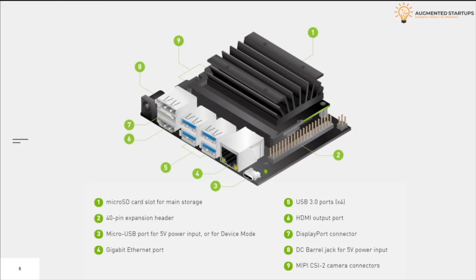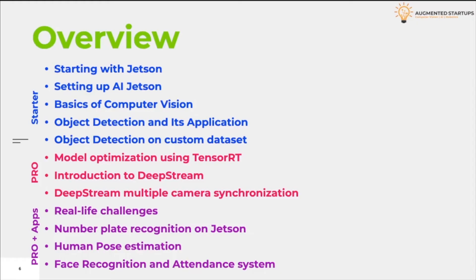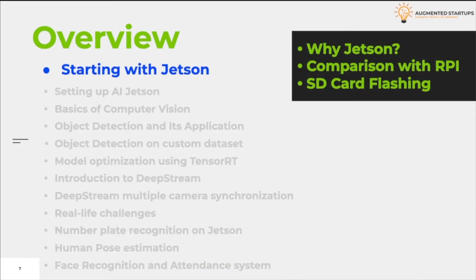Let's move on to the next part where we discuss the content and overview of this course. The course is mainly divided into 3 parts: the Starter part, Pro, and Deploy and Applications. In the first part of this course we will set up our Jetson and discuss some basics of computer vision and artificial intelligence. In the very first module we will discuss why we use the Jetson and how it is better than Raspberry Pi.